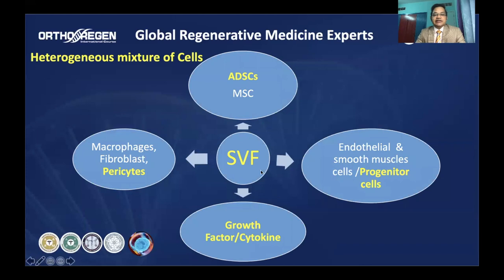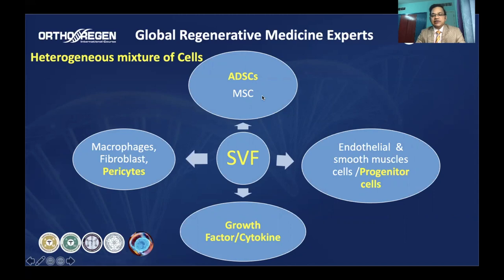SVF is a heterogeneous mixture of cells. It contains adipose-derived stem cells, pericytes, and other healing cells such as macrophages and fibroblasts. It also contains cells that promote angiogenesis — endothelial cells, smooth muscle cells, and their progenitors — along with growth factors and cytokines. Because of this composition of stem cells, growth factors, cytokines, healing cells, and progenitor cells, SVF has been hailed as a promising treatment for different conditions.